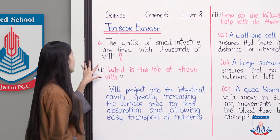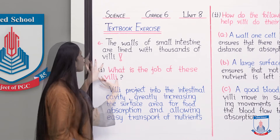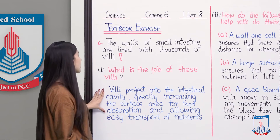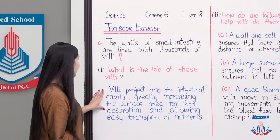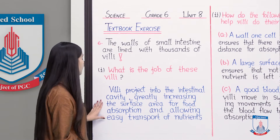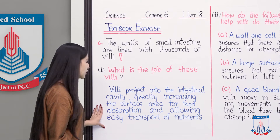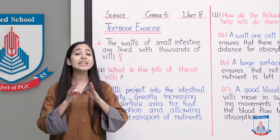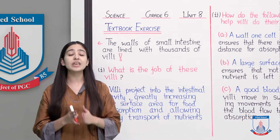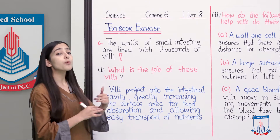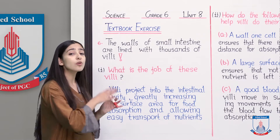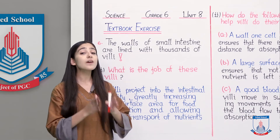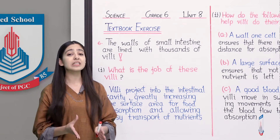Question number 1 is: what is the job of these villai? What function do they perform in our body? The answer is: villai project into the intestinal cavity, greatly increasing the surface area for food absorption and allowing easy transport of nutrients. Villai project into the intestinal cavity - the space inside the intestine - and they greatly increase the surface area for food absorption.